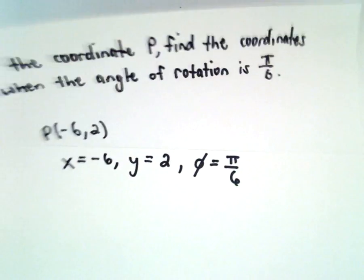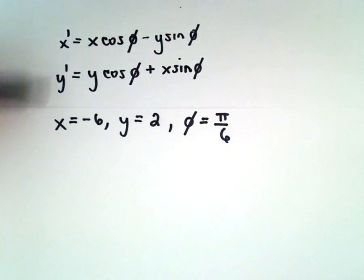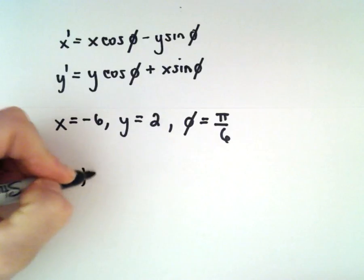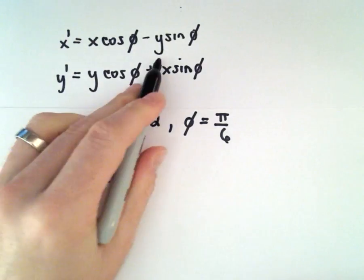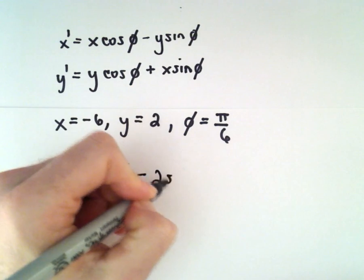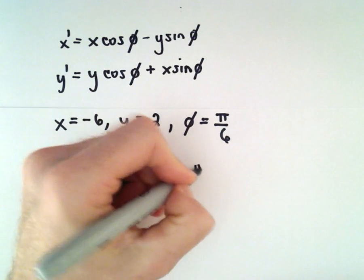This is a straightforward application of our formula. x' will be x, which is -6, times cosine of π/6, minus the y value, which is 2, times sine of π/6.